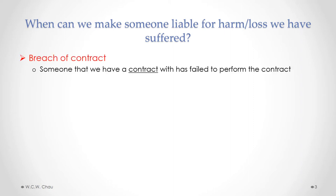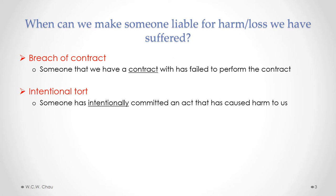In a previous module, we've looked at contracts — specifically how contracts are formed, and once they are formed, how a breach of contract occurs. That's when someone we have a contract with has failed to perform one or more terms of that contract, giving the innocent party the right to sue for losses or damages. We also looked at intentional torts, where someone has intentionally committed an act that caused harm, and the victim has a right to sue for the value of that loss or harm.